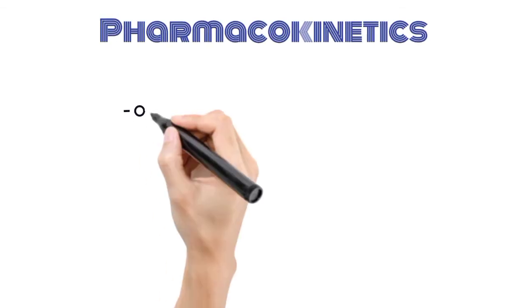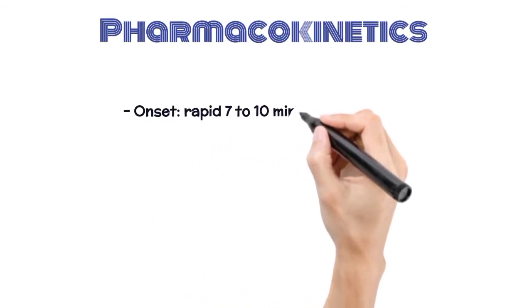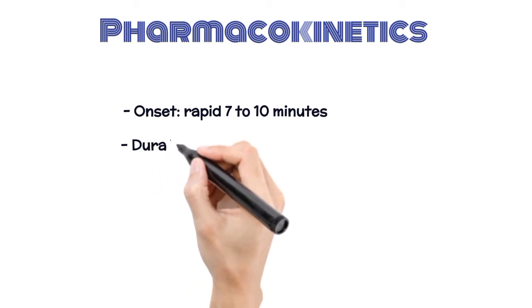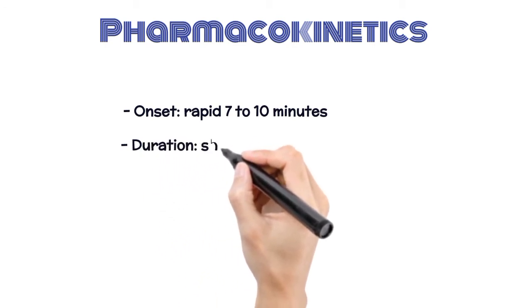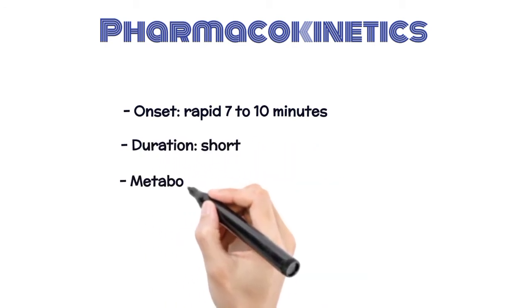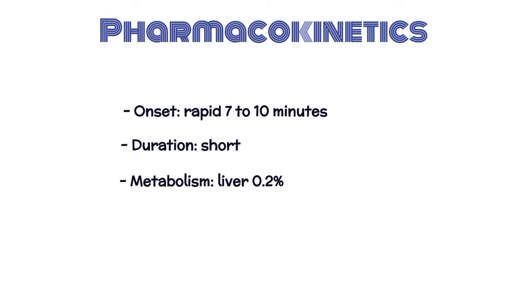Pharmacokinetics: Onset is rapid, 7 to 10 minutes. Duration is short. Metabolism occurs in the liver at 0.2%.